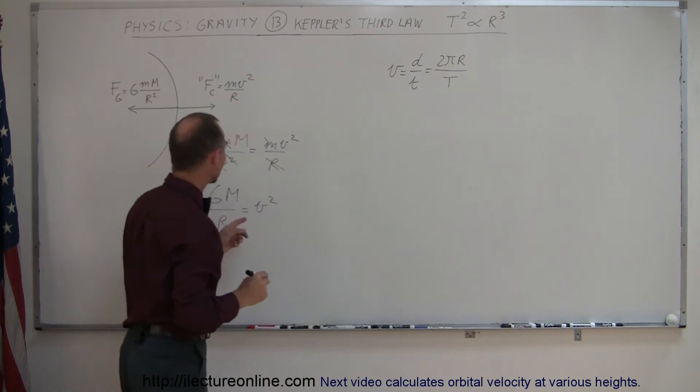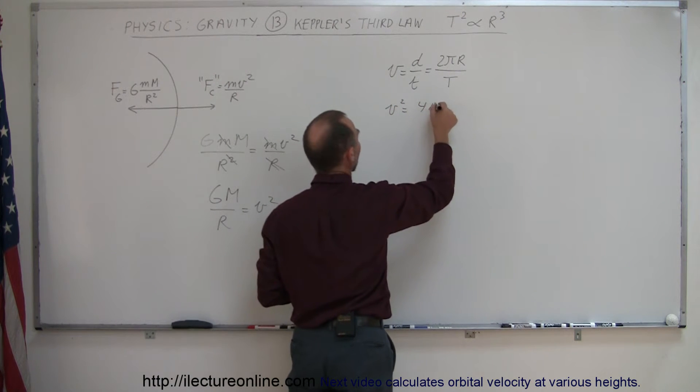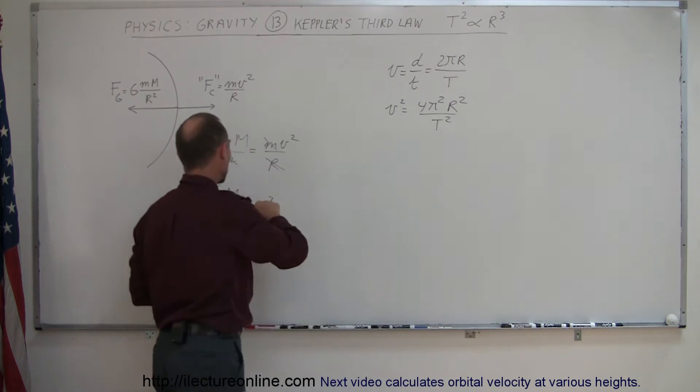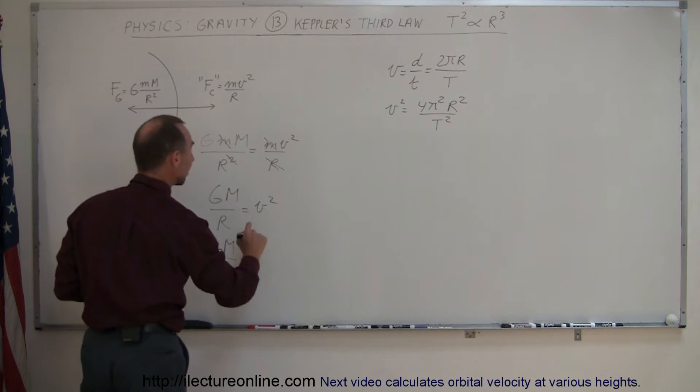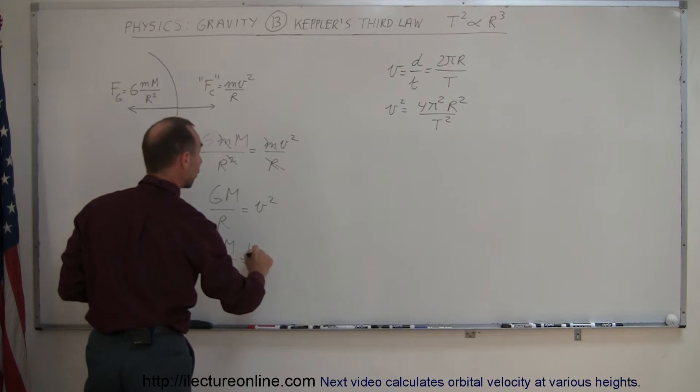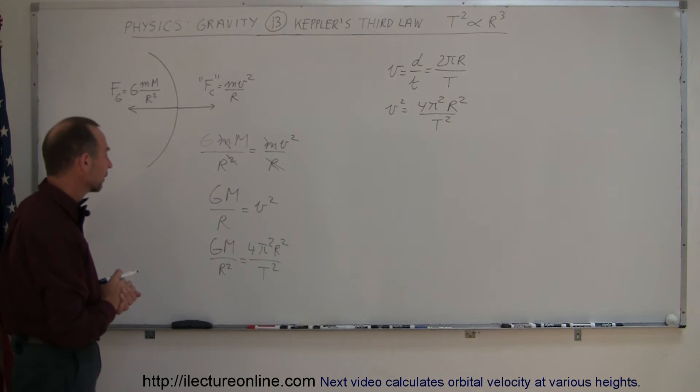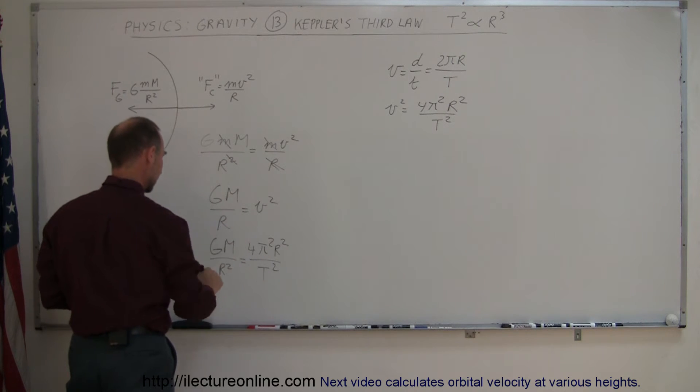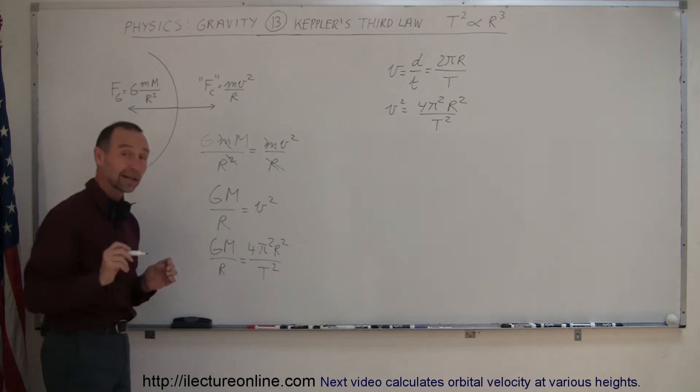So if we now replace V squared by that quantity squared, in other words, V squared is equal to 4 pi squared R squared over T squared, and plug that into our equation. I still have an R here, not an R squared, so I've got to be careful. This is just R to the first power. Good thing that I caught that error, otherwise we're going to have problems.